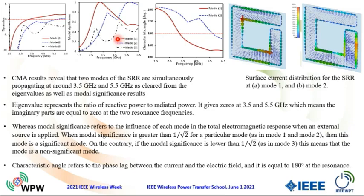Also, modal significance refers to the total electromagnetic response. When the modal significance is greater than the square root threshold for a particular mode, this is a significant mode. On the contrary, if the mode is below the threshold, it is a non-significant mode. As shown in this figure, the characteristic angle refers to the phase relationship between the induced current and the radiated electric field.